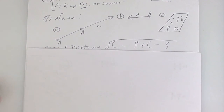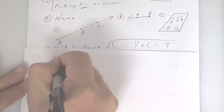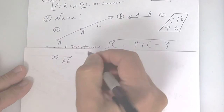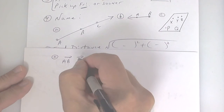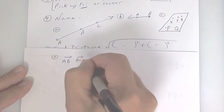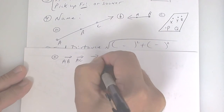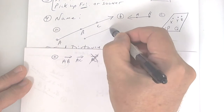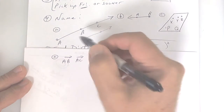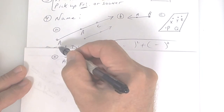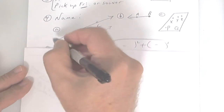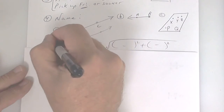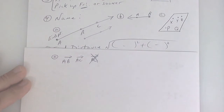I want you to name these diagrams. This one is a ray, so for part A you can name it as ray AB or ray AC. You cannot name it as ray BC, because BC would only go from here to here — that would not be the whole ray. You have to start at A, which is called the endpoint — it's at the end.